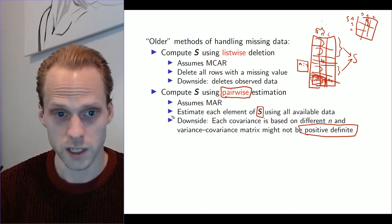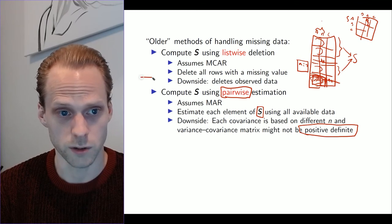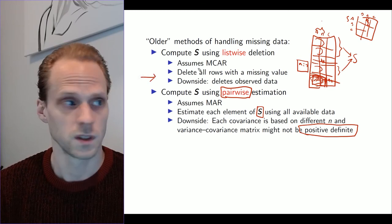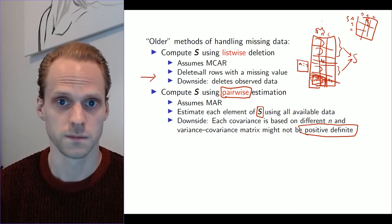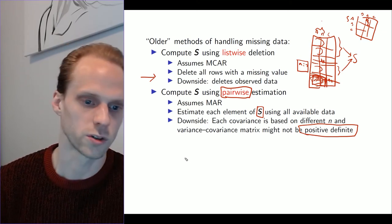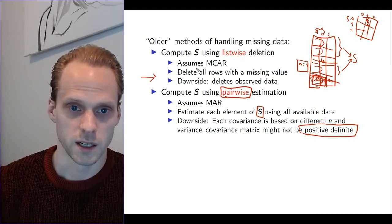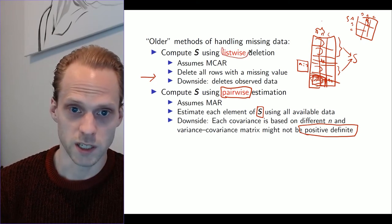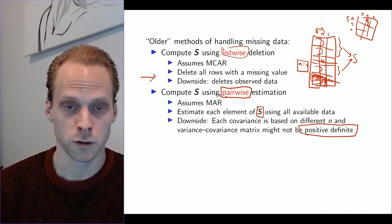In network estimation actually, to get a little detail, people are doing this. There is no missing data handling yet, except for in the Psychonetrics package with FIML, which I will talk about now. So people usually do listwise deletion or pairwise deletion, that is quite common still.